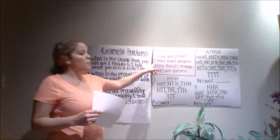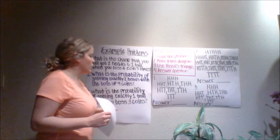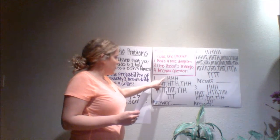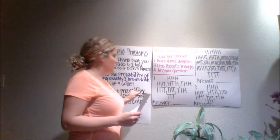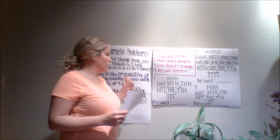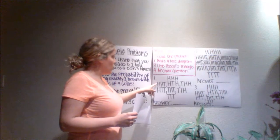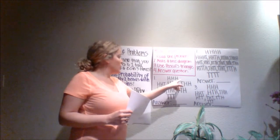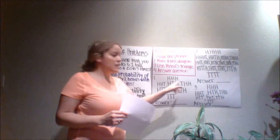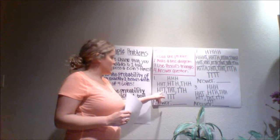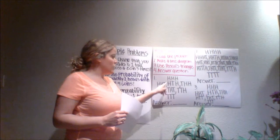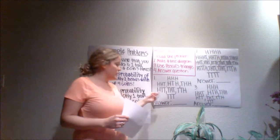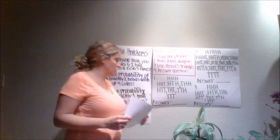Our second step says to make a tree diagram. So right here, the combinations are: heads-heads-heads, heads-heads-tails, heads-tails-heads, tails-heads-heads, heads-tails-tails, tails-heads-tails, tails-tails-heads, and finally tails-tails-tails. Those are all the combinations you can get.